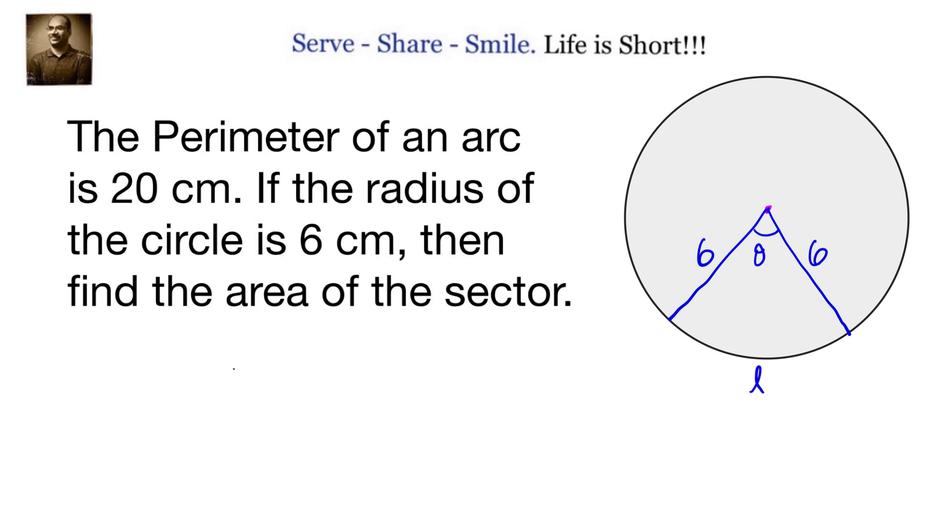Now what is the meaning of perimeter of an arc? It is nothing but the length of the arc which we know is theta by 360 into 2 pi r, where theta is the central angle and r is the radius of the circle.